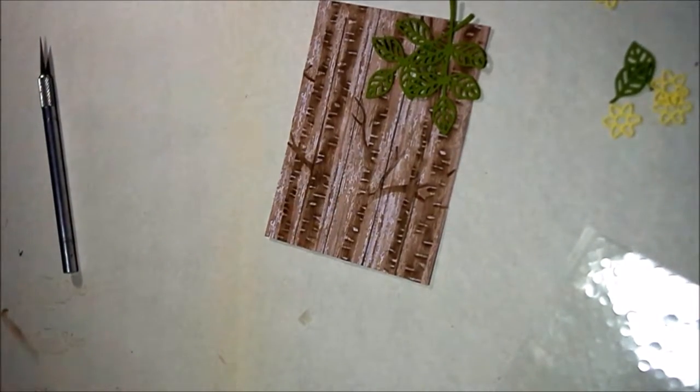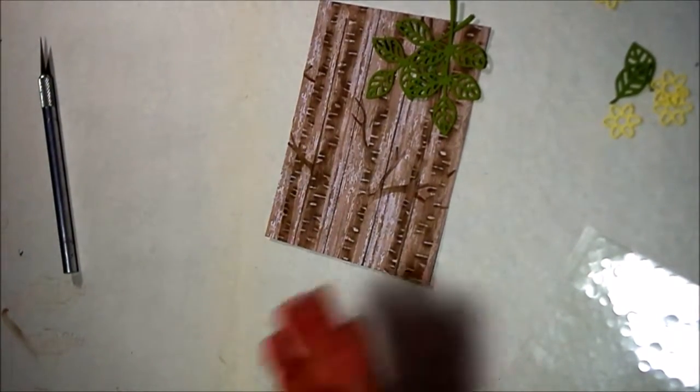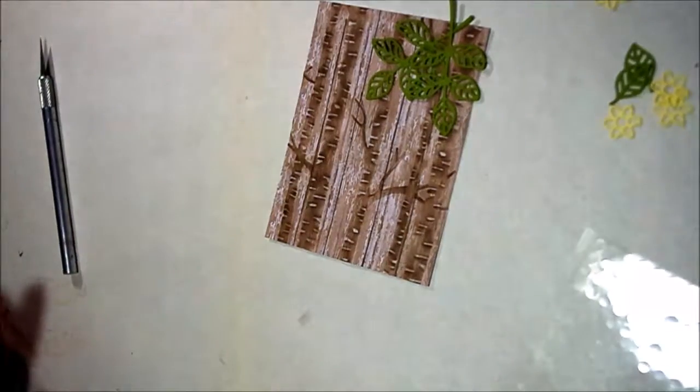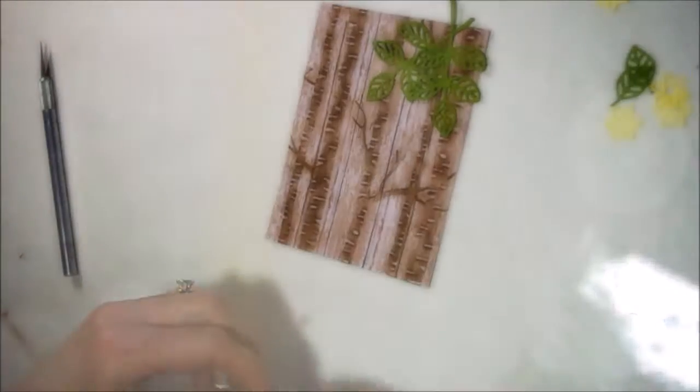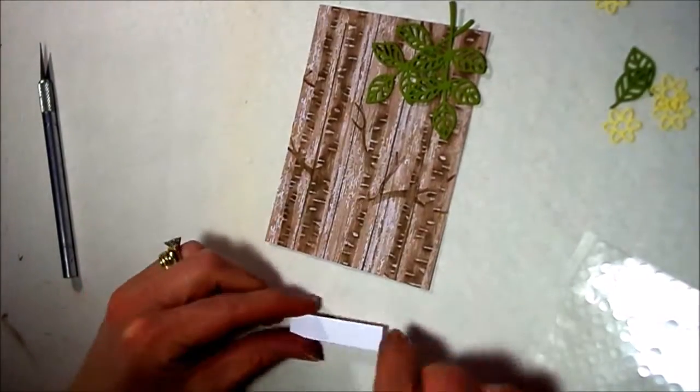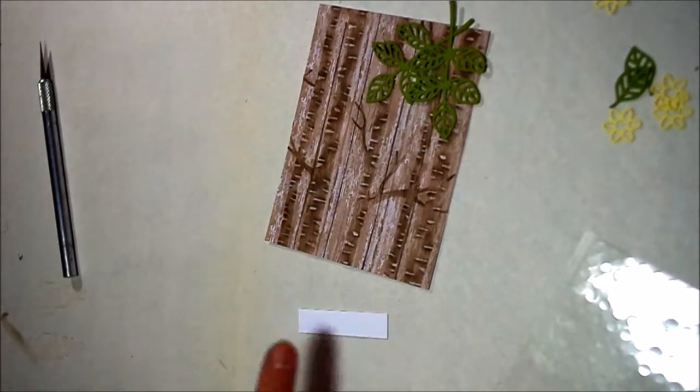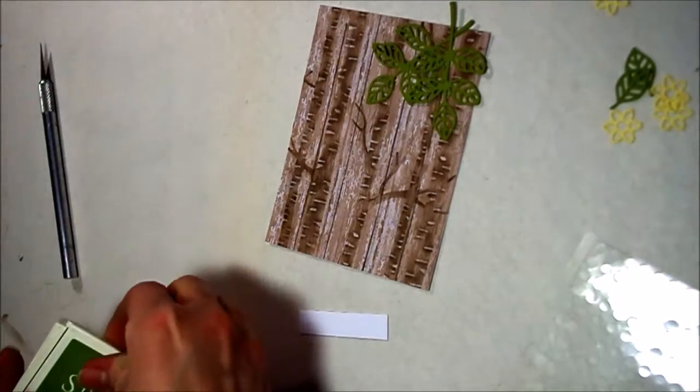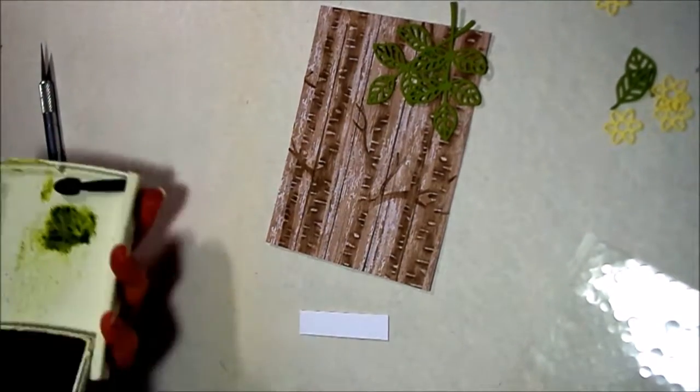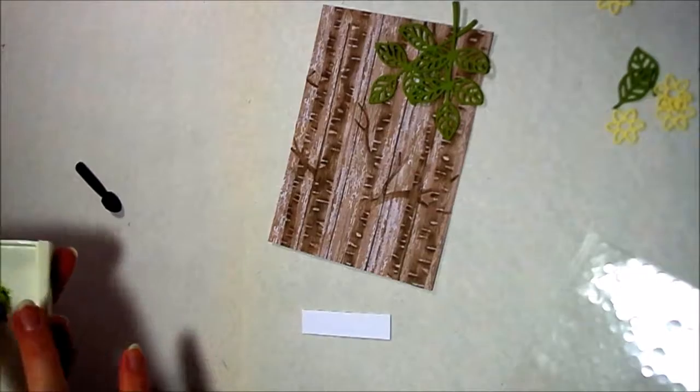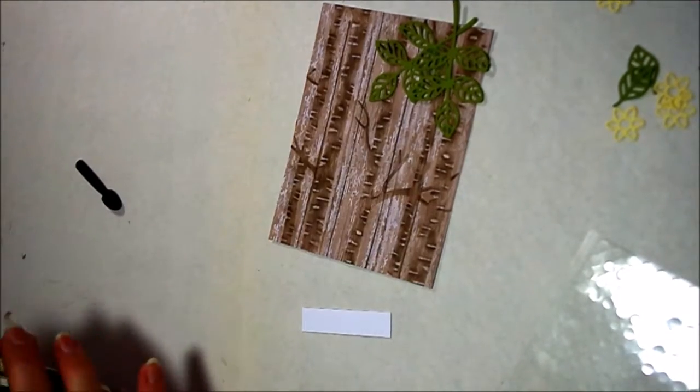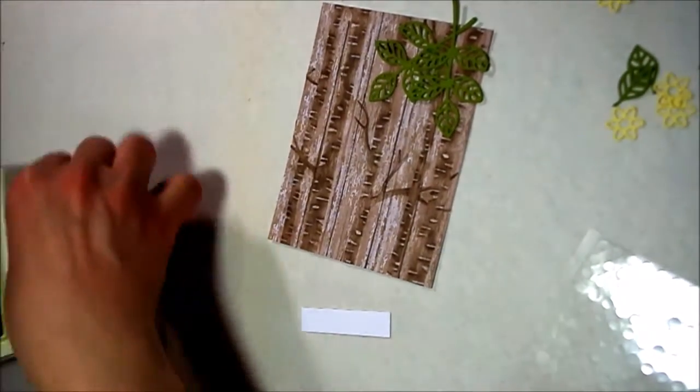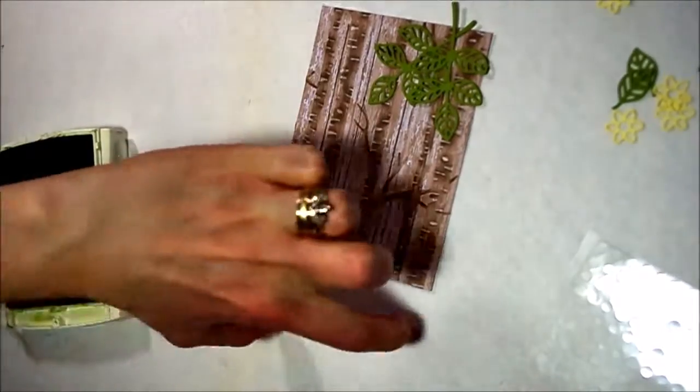And then we're also going to put a sentiment on this. I did use a sentiment. You could just put the flowers on in the corner and leave a sentiment off, but I liked it with the sentiment on it. So I have here a small piece that I'm going to do the sentiment. I took my old olive ink, and this piece, this little piece of paper is a half inch by two inches, so it's a half inch thick, two inches wide.